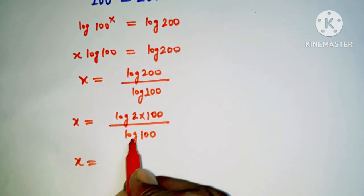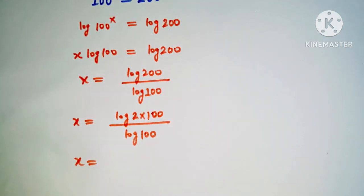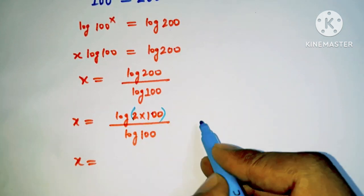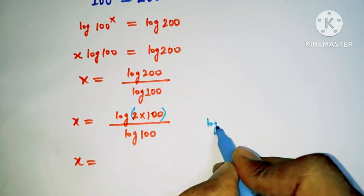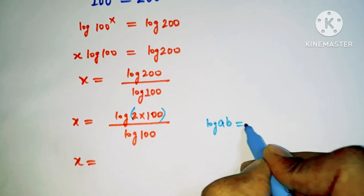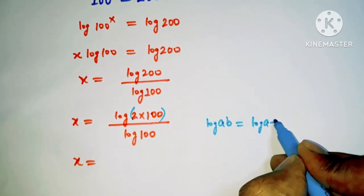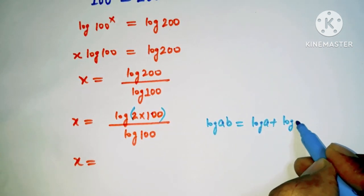And x equal to log 2 into 100 can be solved by using this formula: log a into b equals log a plus log b.